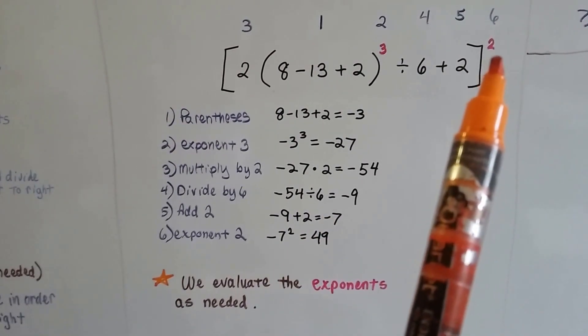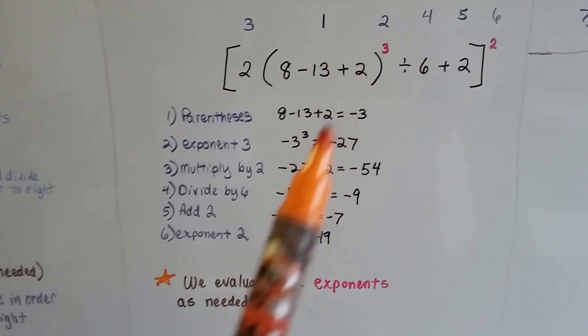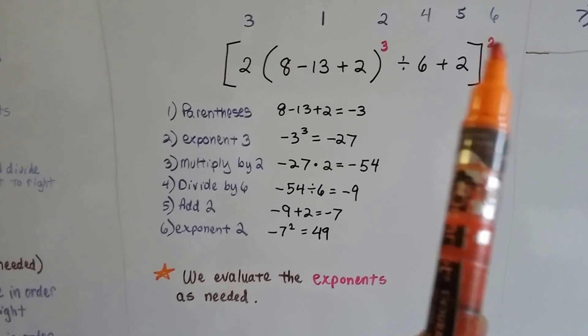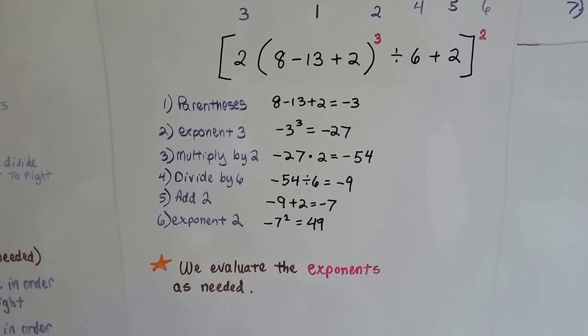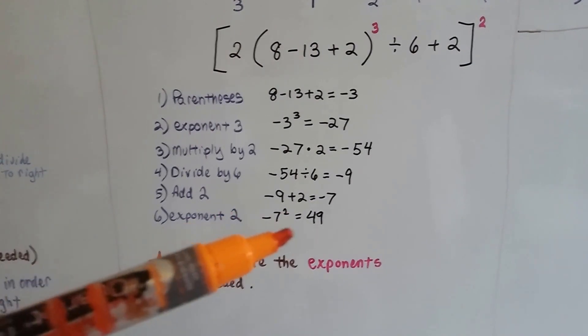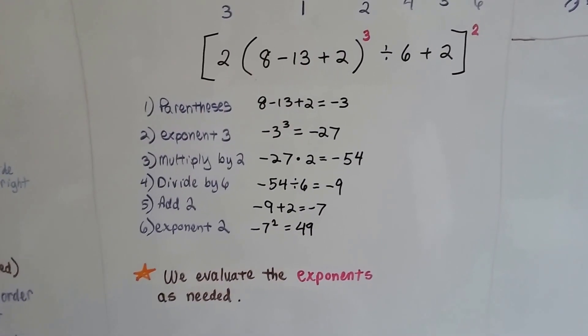Now we're going to do the exponent on the outside. See that we didn't do the exponents together like right in the beginning after the parentheses? Because this one is outside the bracket, it's going to be done last. That's our sixth step. So negative 7 squared is a positive 49. We evaluated the exponents as we needed to.